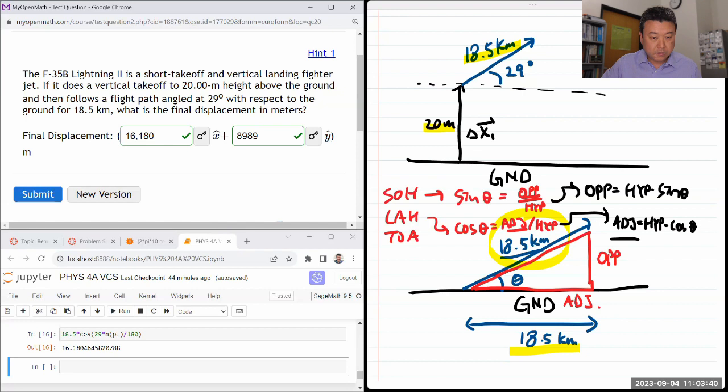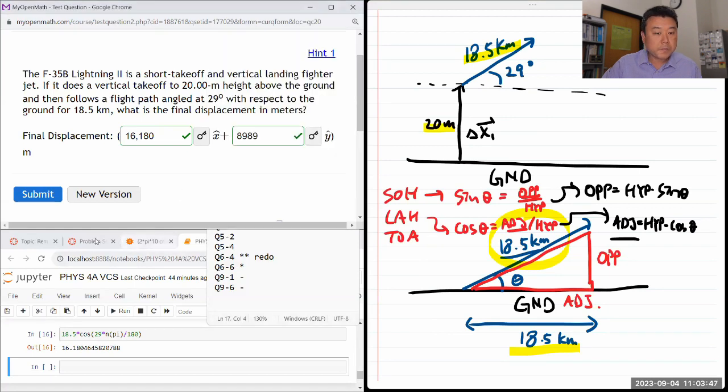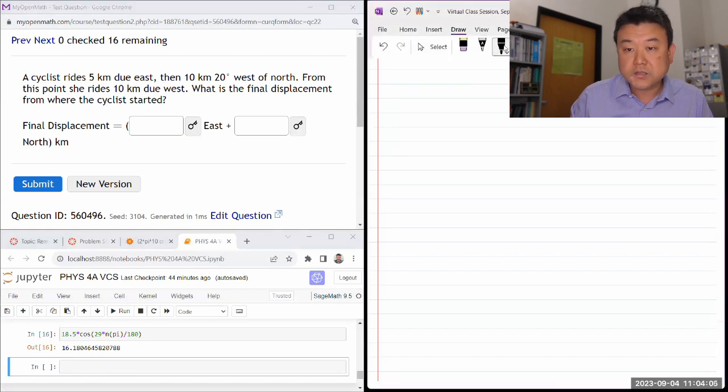Okay, so I have one more question here. Let me just wrap that up. 5-4. So this question says a cyclist rides, let me just start sketching that.